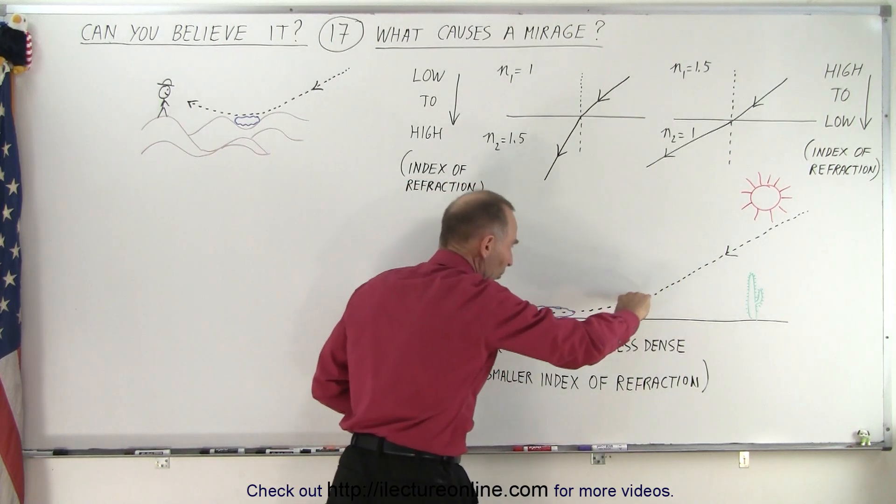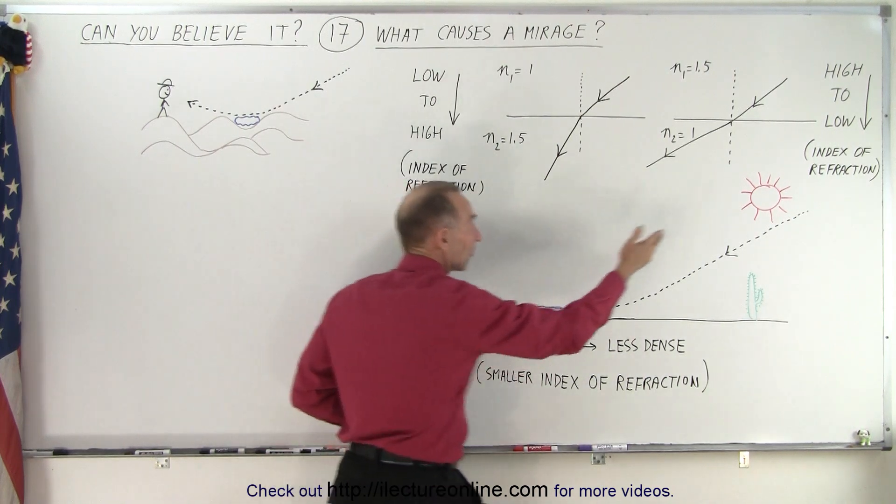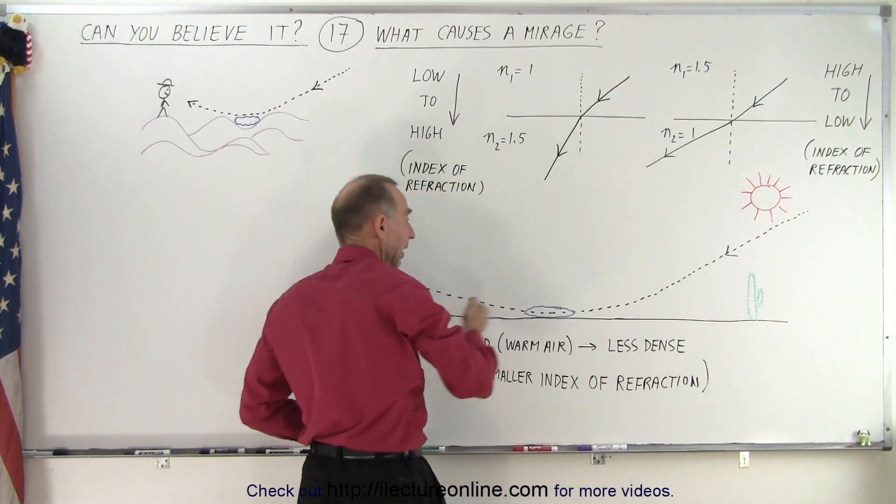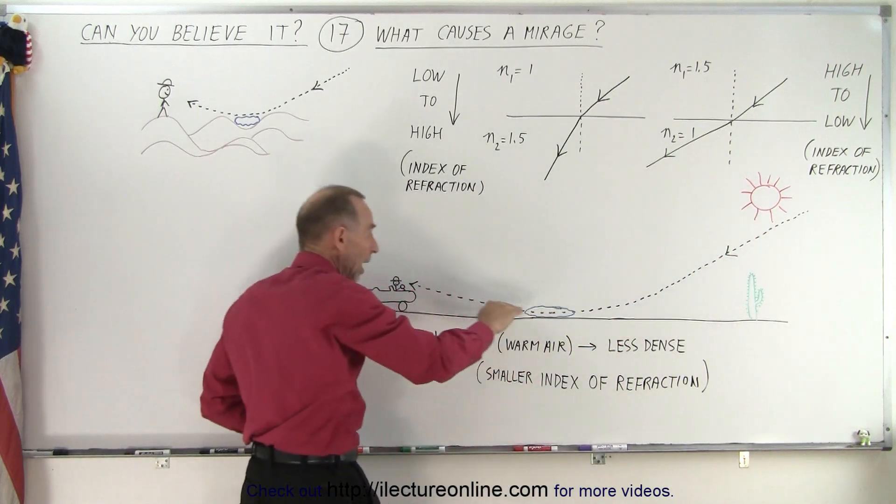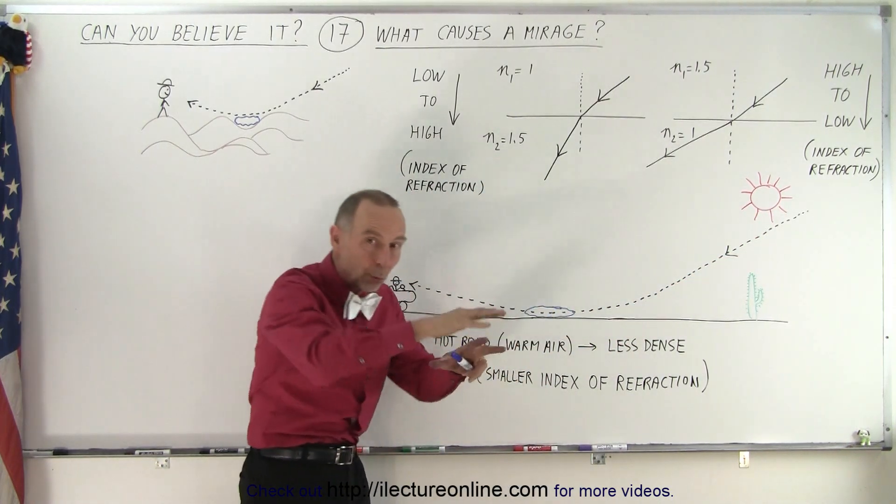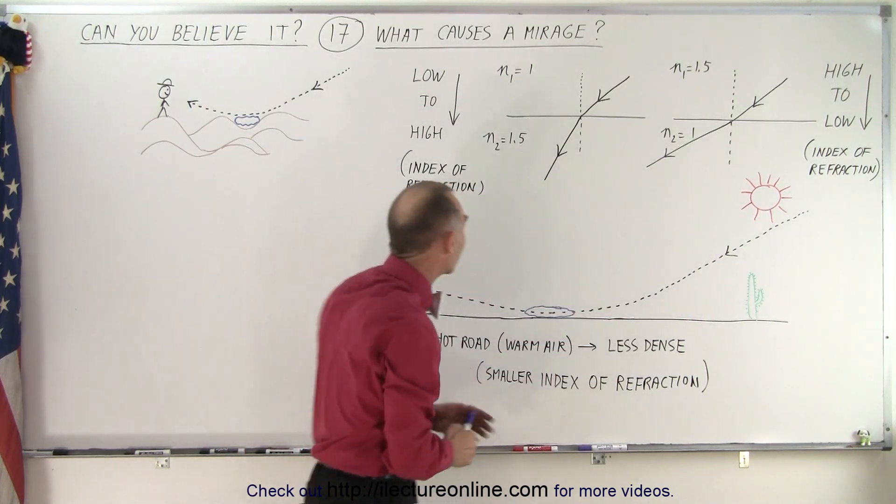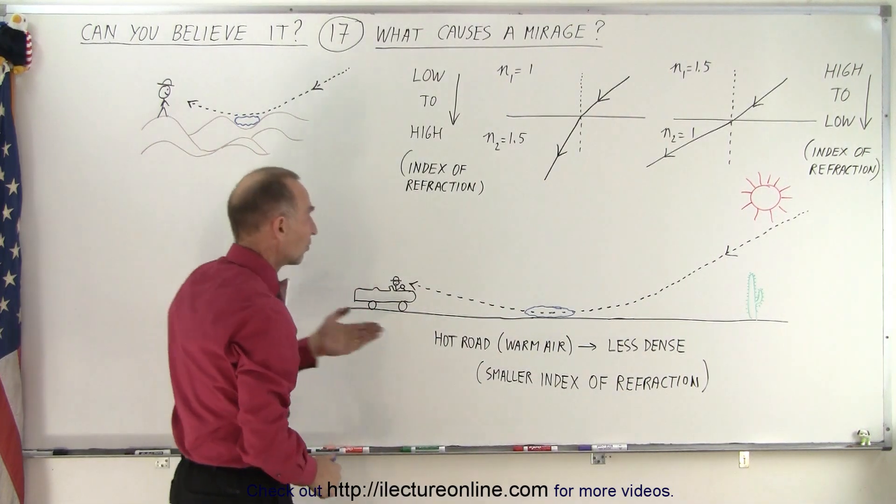Therefore, the light comes this way, and eventually we're able to see that light. Instead of coming from the sky directly, it appears to be coming from the road upward. This looks like water on the road, but as we keep driving, it keeps moving away from us, just like a mirage in the desert.